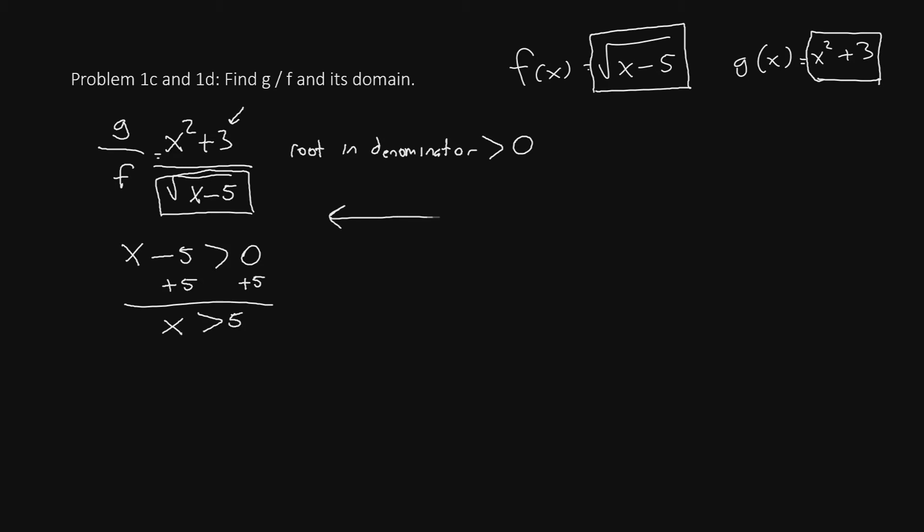Once again, we can draw a number line. Place the infinities on the left and right. This time we'll place an open circle at 5, because it is strictly greater. Anything greater than 5 will be okay, anything less will be excluded.